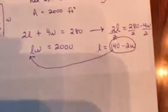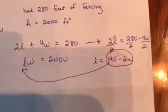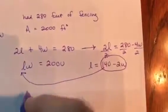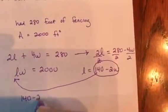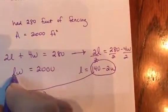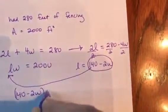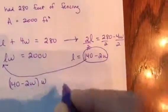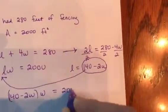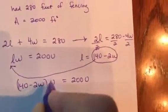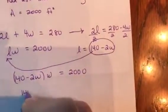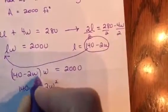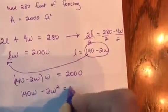Remember we did what's called the elimination or the addition method, and we would do the substitution method as well in algebra 1. So I've got 140 minus 2W, I'm substituting that in for the L, times W, equals 2,000. If I distribute the W in, because I'm multiplying, I have 140W minus 2W squared, because W times W is W squared, equals 2,000.